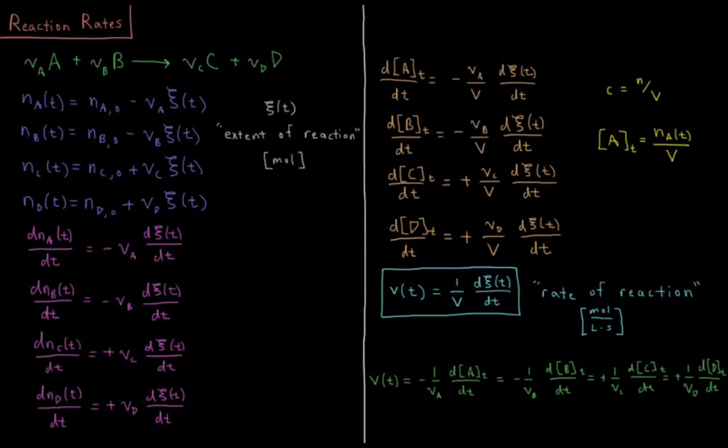This video will introduce the concept of reaction rates in chemical kinetics. If we look at our prototypical reaction, which we've been using throughout this playlist, we have reactants A and B going to products C and D. They each have a stoichiometric coefficient: nu A, nu B, nu C, and nu D.